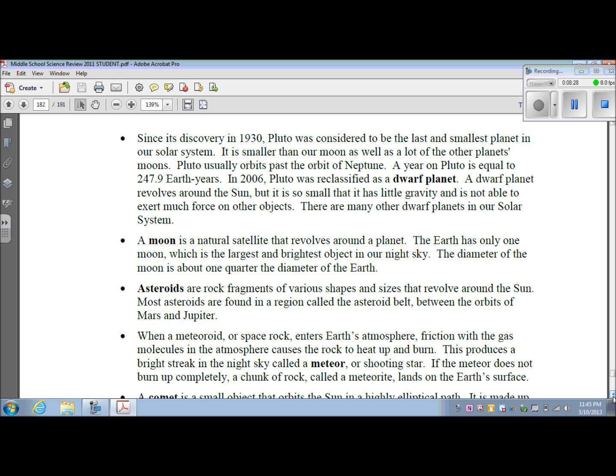Asteroids are rock fragments of various shapes and sizes that revolve around the Sun. Most asteroids are found in a region called the asteroid belt between the orbits of Mars and Jupiter.